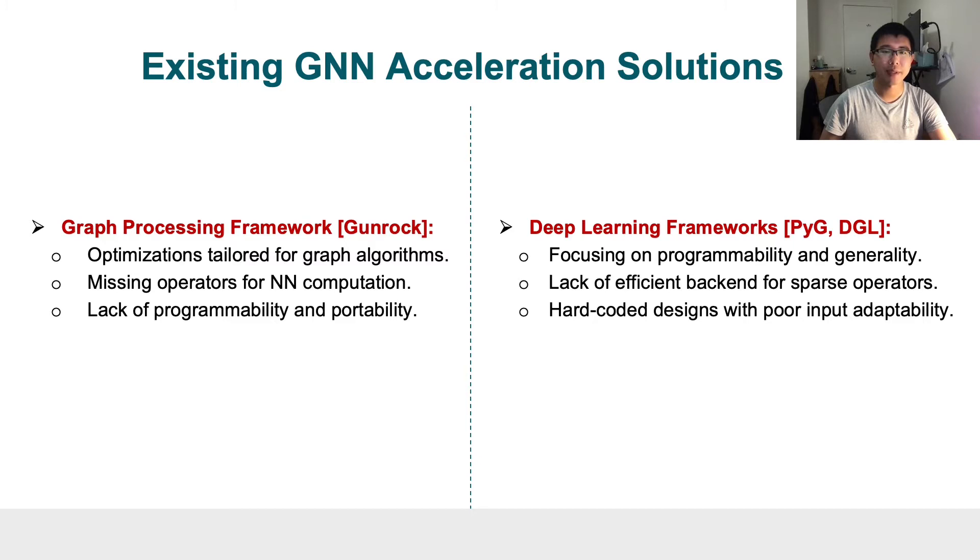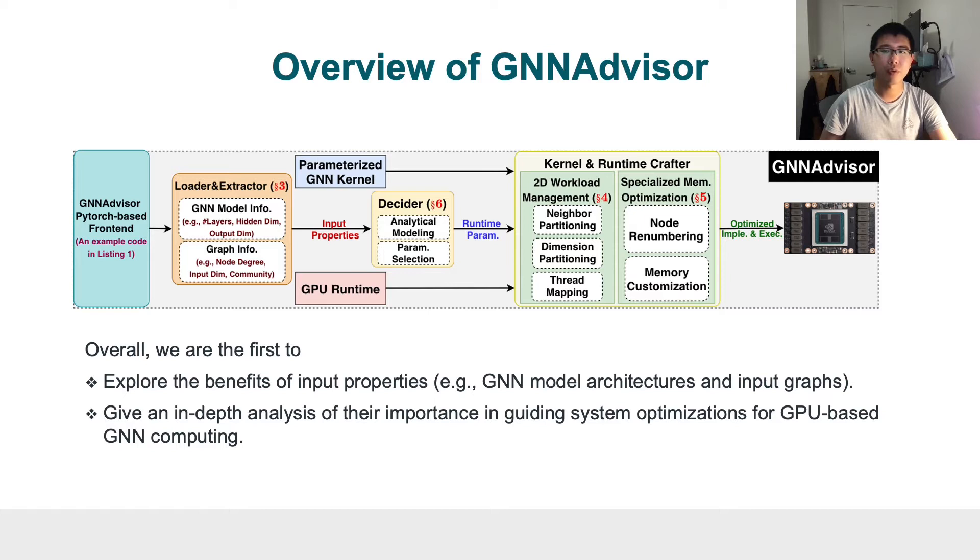By considering all these observations, we would like to introduce our GNAdvisor design for adaptive and efficient GNN execution on GPUs. Our design consists of several major components, including a loader and extractor to exploit input-level information that can guide our system-level optimization, a decider for automatic runtime parameter selection, and a kernel and runtime crafter for input-aware kernel adaptation at runtime.